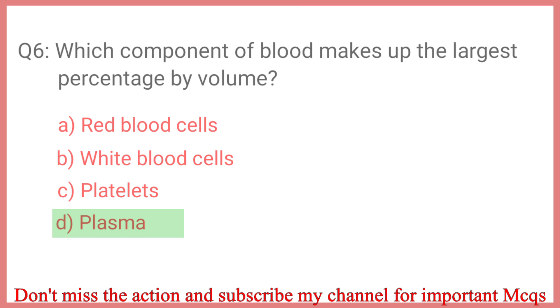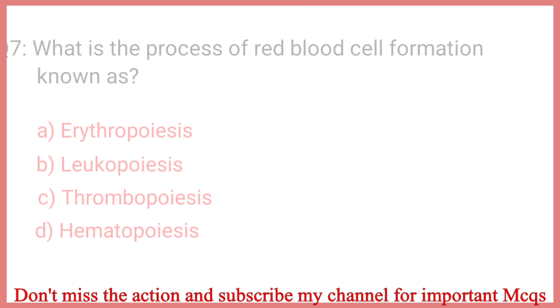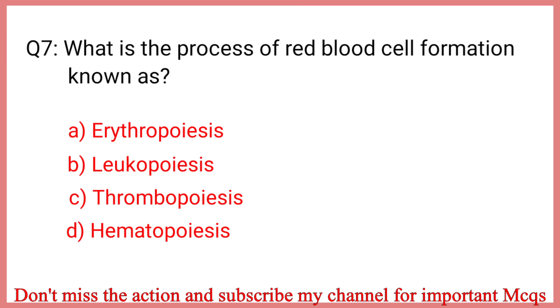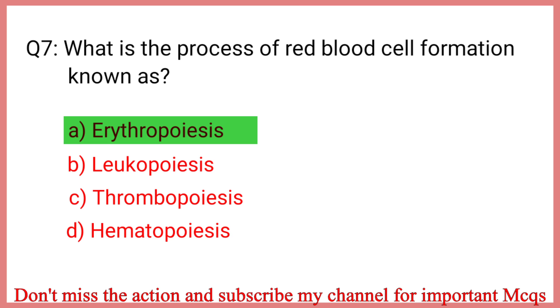Question number 7. What is the process of red blood cell formation known as? The correct answer is Option A: Erythropoiesis.